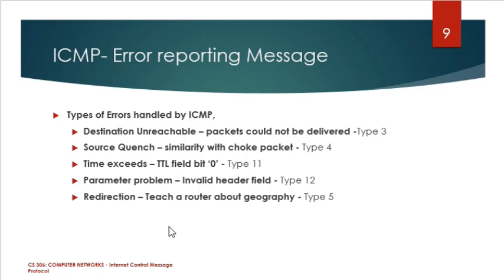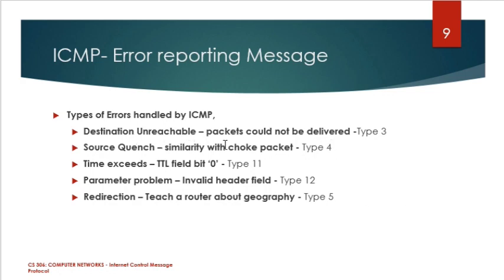The router should know about the geography of the entire network, so it redirects using a redirection reporting message. The type codes for these messages are: type 3 means destination-unreachable, type 4 means source-quench, and type 11 means time-exceeded.